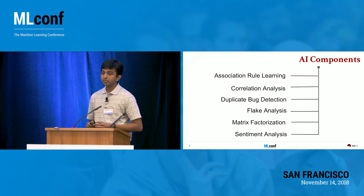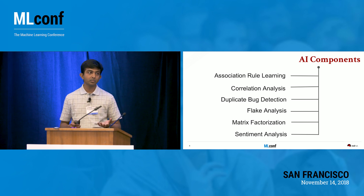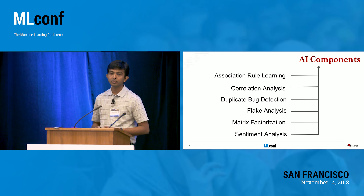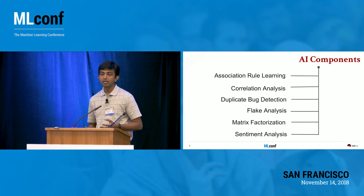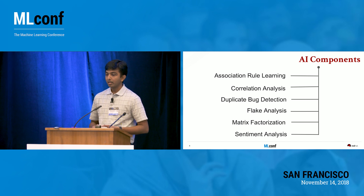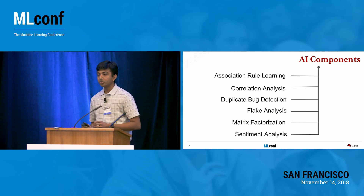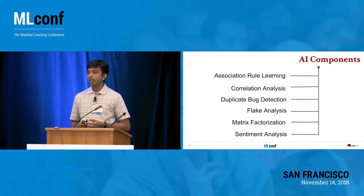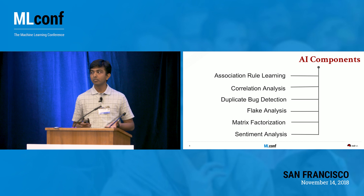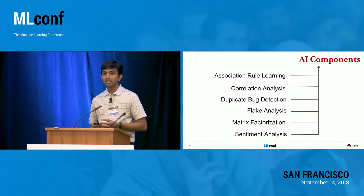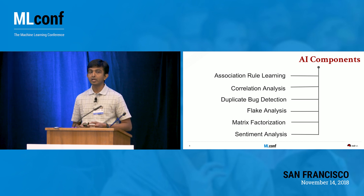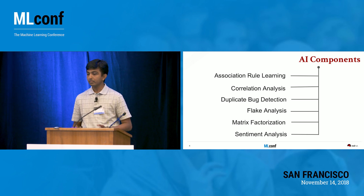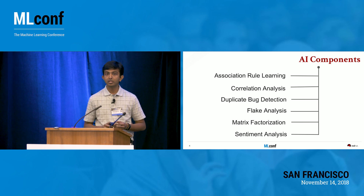Next comes correlation analysis — a well-known statistical technique that quantifies the linear association between features and gives you the strength and direction. Duplicate bug detection is about detecting whether a newly reported problem already exists in your defect tracking system or not. Flake analysis is about detecting false positives in your test failures — those tests that actually fail but shouldn't have.